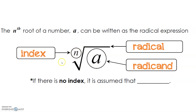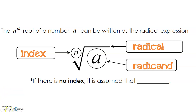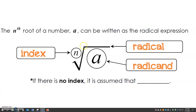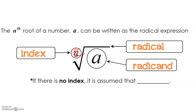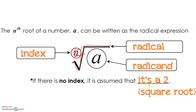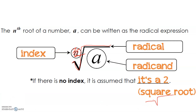Now, if there was not an N here — say if we just erased it — then that would just be this radical right here. All that is, is that it's assumed to be a square root, because it's assumed there's a 2. We won't write that 2; we'll just write it like so, and it's just a square root. We don't write the number because you can't take the first root of any number — because 4 to the first is just 4, and 5 to the first power is just 5.